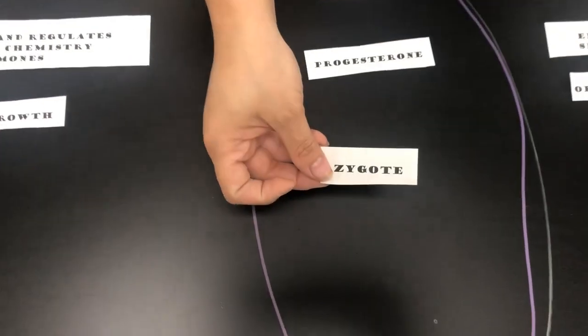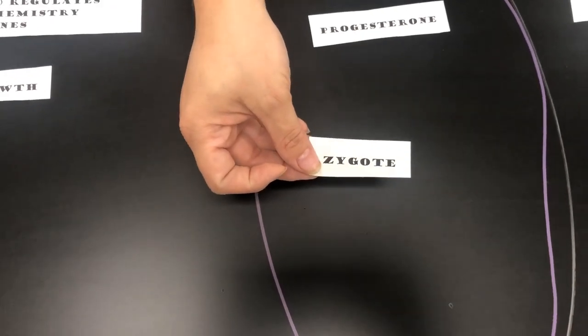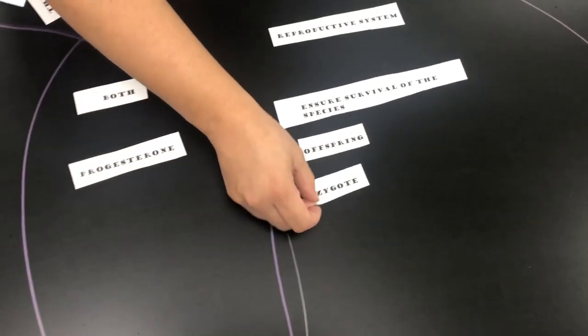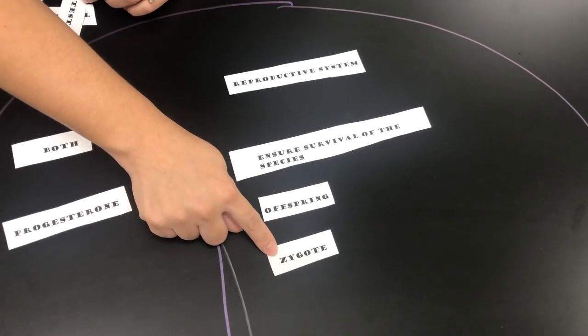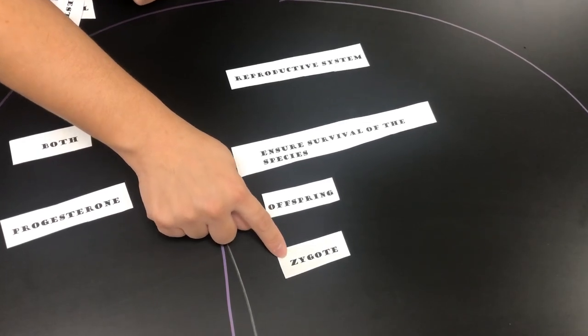Zygote was a term that we covered in the reproductive system notes. It's kind of like an offspring—it's before a baby is born. It's the very beginning stages of reproduction.